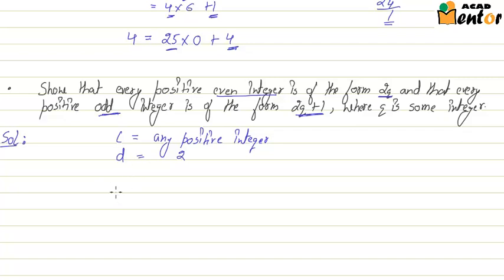So using Euclid's lemma we can express C as a multiple of D and Q plus R since D is 2 we'll say 2Q plus R.